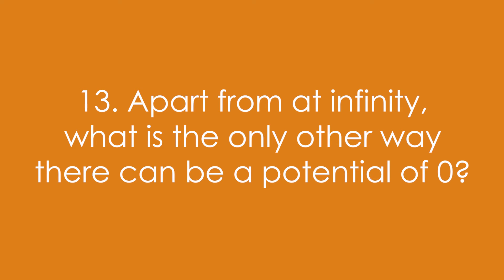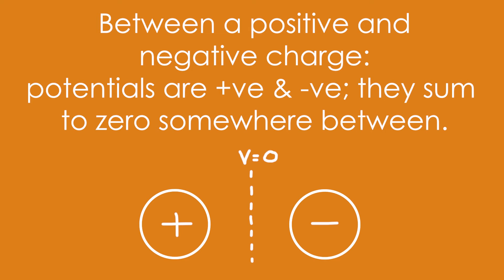Thirteen, apart from at infinity, what is the only other way there can be a potential of zero? It's not possible for gravitational fields, but it is possible for electric fields if we have a positive and a negative charge, for example. Because the potentials are positive and negative, they add up to zero somewhere between.